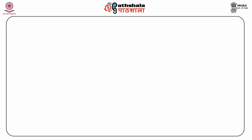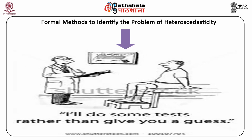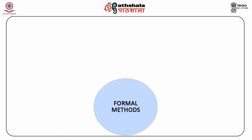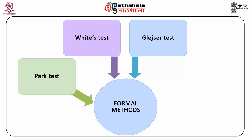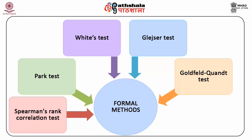Now let us move on to discuss the formal methods to identify the problem of heteroscedasticity. Formal methods include: Park test, Glejser test, White's test, Spearman's rank correlation test, Goldfeld-Quandt test, and Breusch-Pagan test. Let us now take a look at each one of them in the following slides.